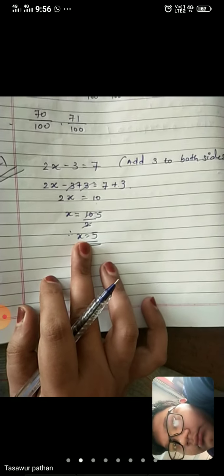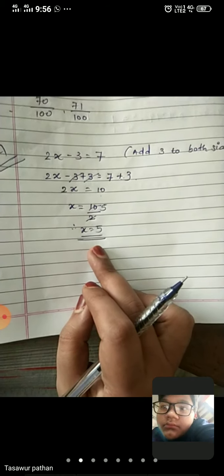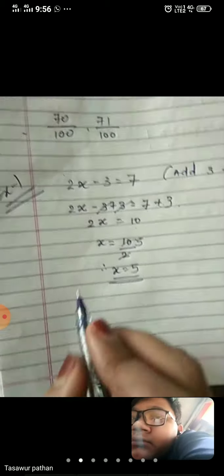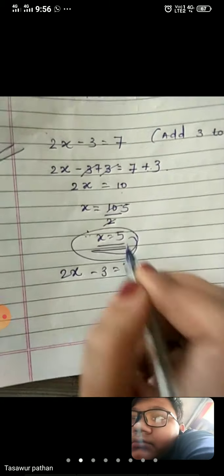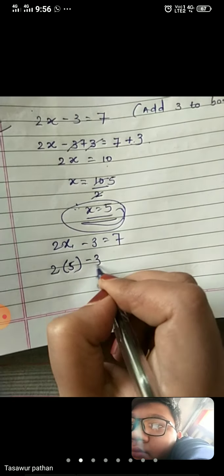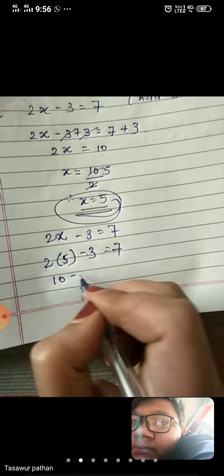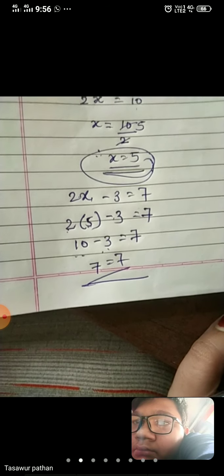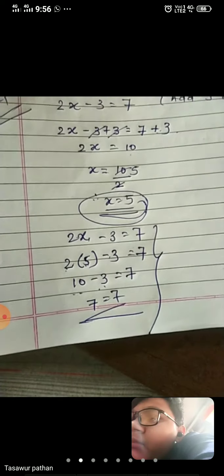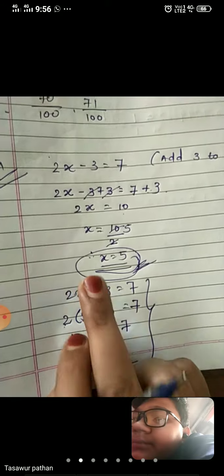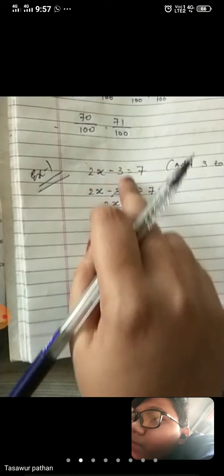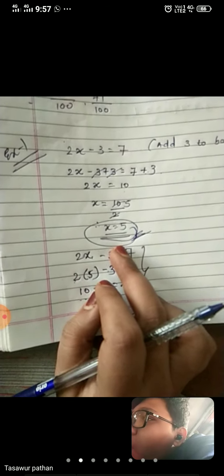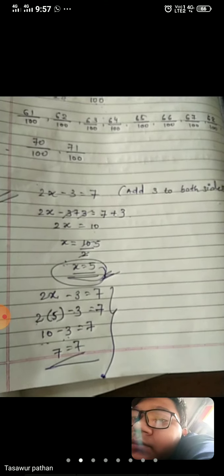This was Example 1 of Chapter number 2. We had to find the solution of 2x minus 3 is equal to 7, and the solution is x is equal to 5. Let's verify: substituting x equals 5 into 2x minus 3: 2 times 5 is 10, minus 3 is equal to 7. So 10 minus 3 equals 7, which equals 7. Correct! So here our Example 1 is over. Inshallah, in our next session we will go further and do more examples and exercises.